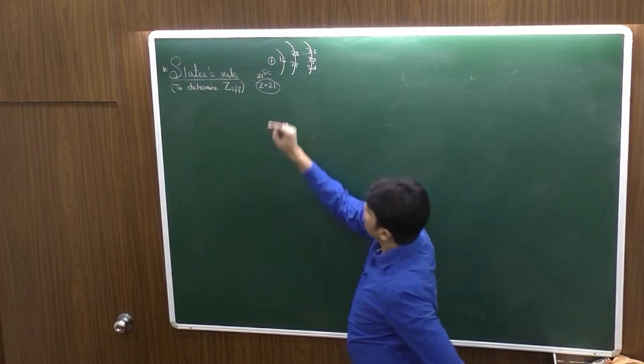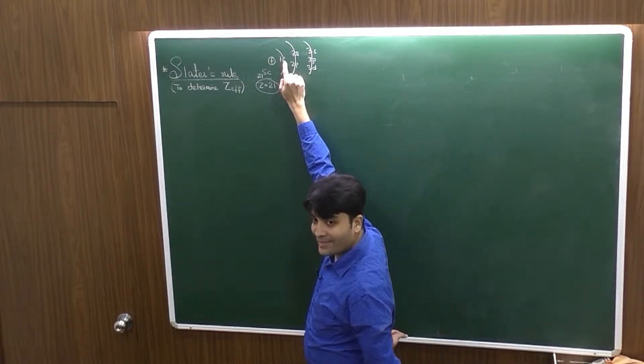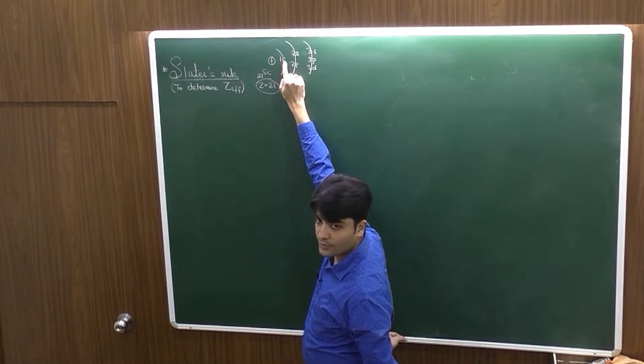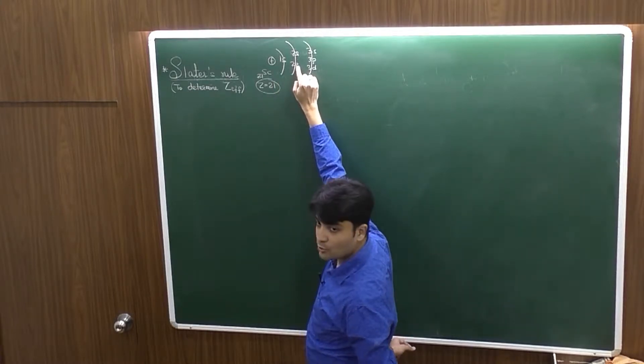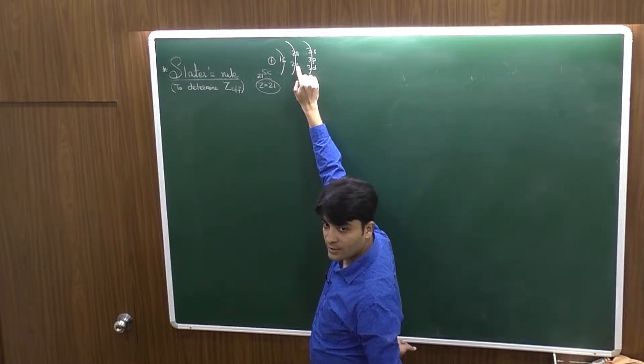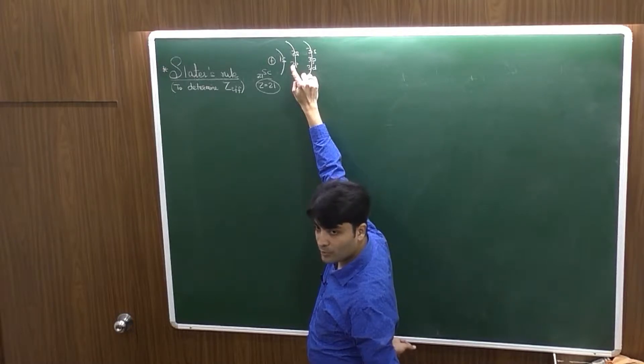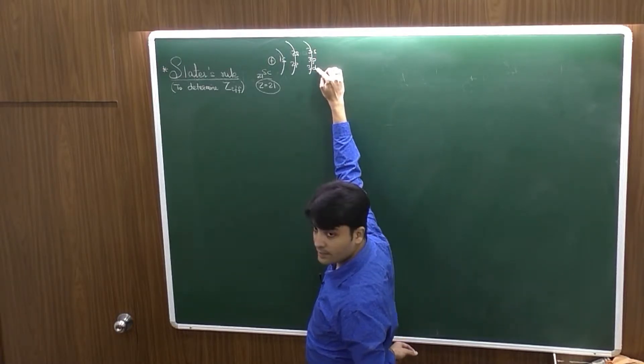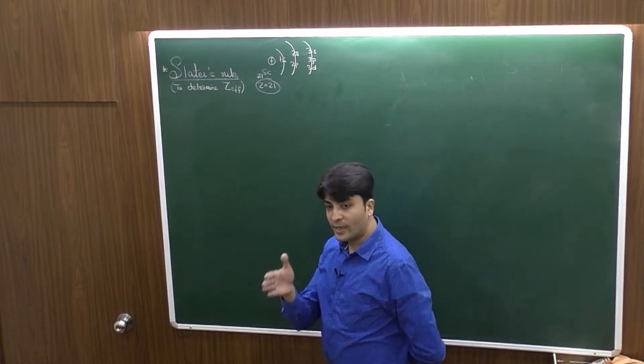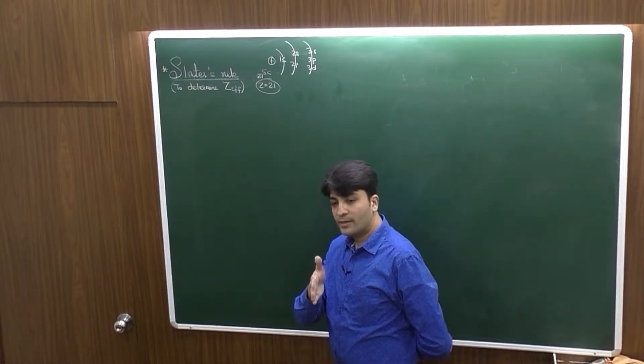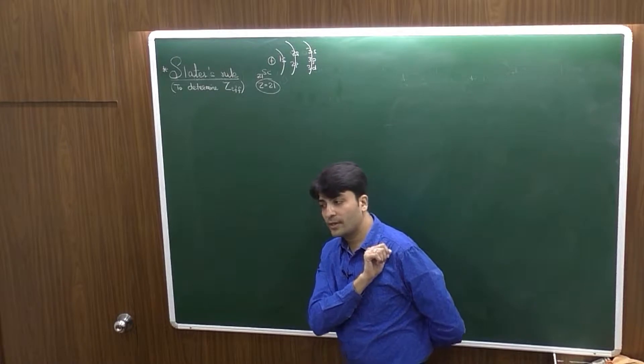If I talk about the S electrons in 1S, they will be attracted to how many protons? 21, which are present in the nucleus. Moving ahead, 2S, 2P will experience the attraction again from 21 protons. 3S, 3P, 3D will experience 21. Will the attraction power for 1S, 2nd orbital electrons and 3rd orbital electrons be same? No.